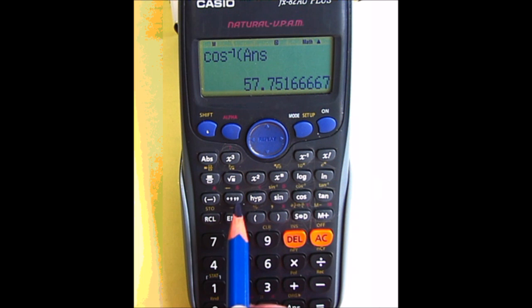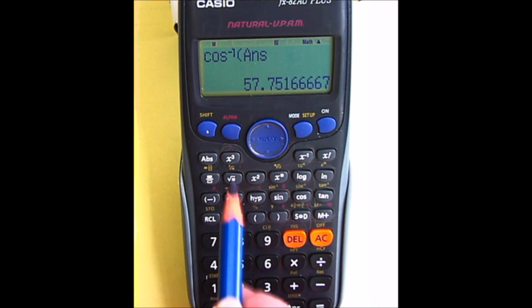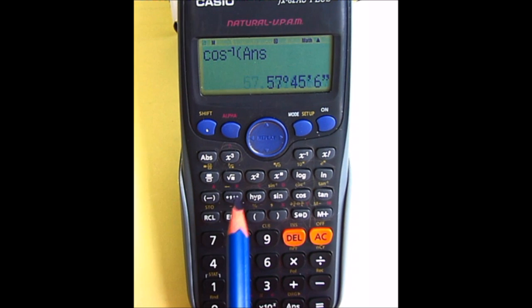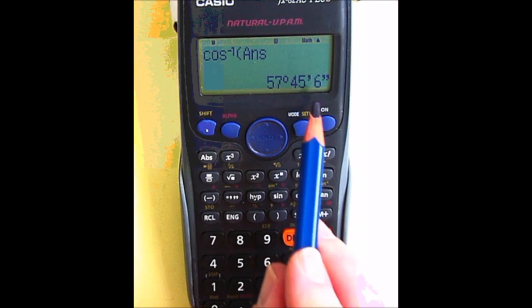So once again, above the degree, minutes, second button you've got an arrow. So I'll press shift and that button. And there it is in degrees, minutes, and seconds.